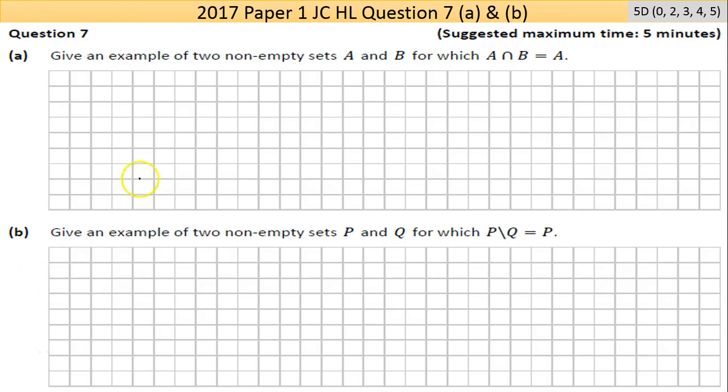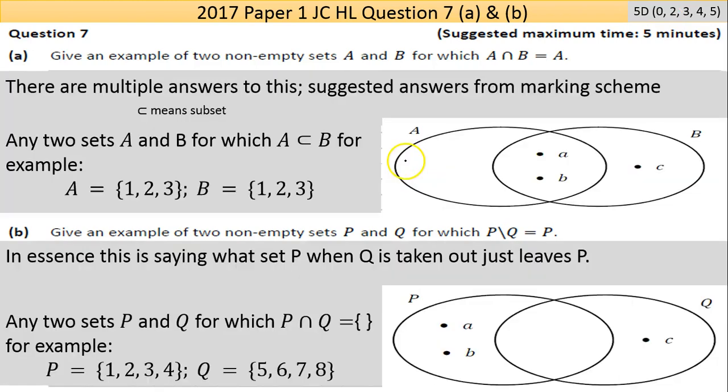Hi and welcome to the 2017 paper 1 Junior Cert Higher Level. This is question 7, part A and B combined together for only five marks. This is a very small question.